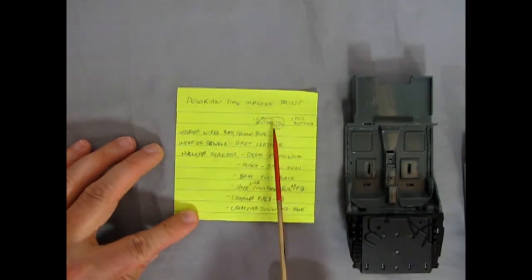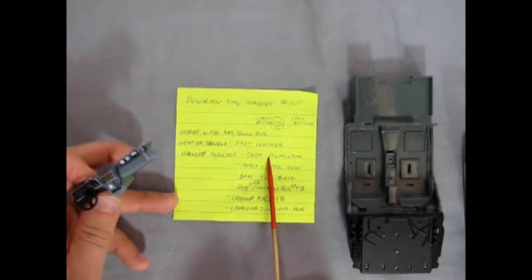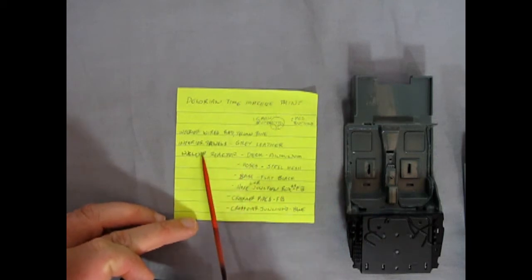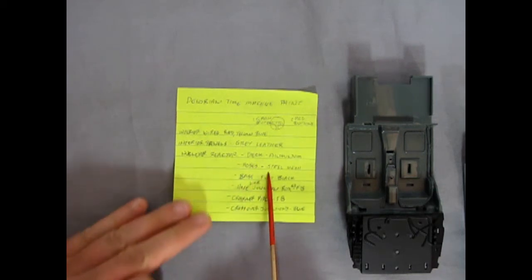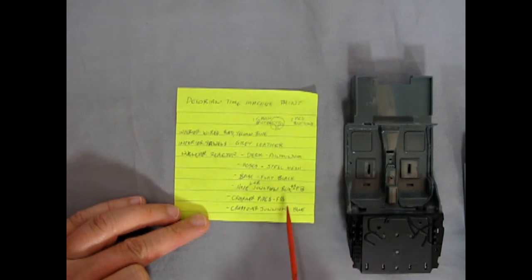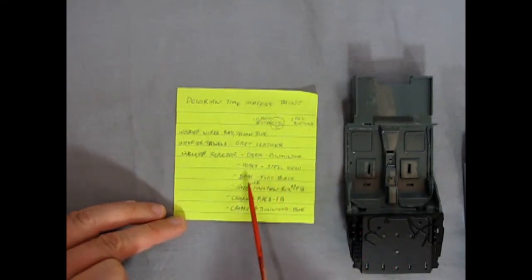I've got a little paint list going on here of how this is all going to get painted up inside. So we have on our steering wheel, there is a green button on here and two red buttons. The interior wires are red, yellow and blue. The interior panels are grey leather. And the nuclear reactor, this is all in the back. So it's aluminum, the hoses are steel mesh, the base is flat black. There's a hose, left and right junction boxes are also flat black. Crossover pipes are flat black and the crossover junctions are blue. So we're going to start painting this thing just like this, which I got off the movies, of course.